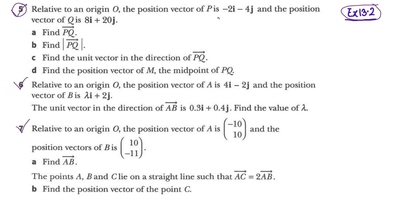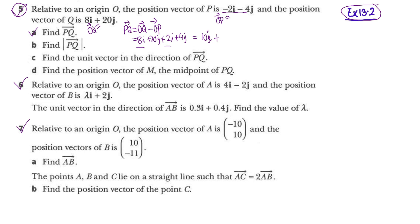The position vector OP is given, and position vector OQ is given as 8i plus 20j. For the first part, PQ can be written as OQ minus OP. So we write 8i plus 20j minus OP, which gives us plus 2i plus 4j. So 8i plus 2i gives 10i, and 20 plus 4 gives 24j. This is our vector PQ.